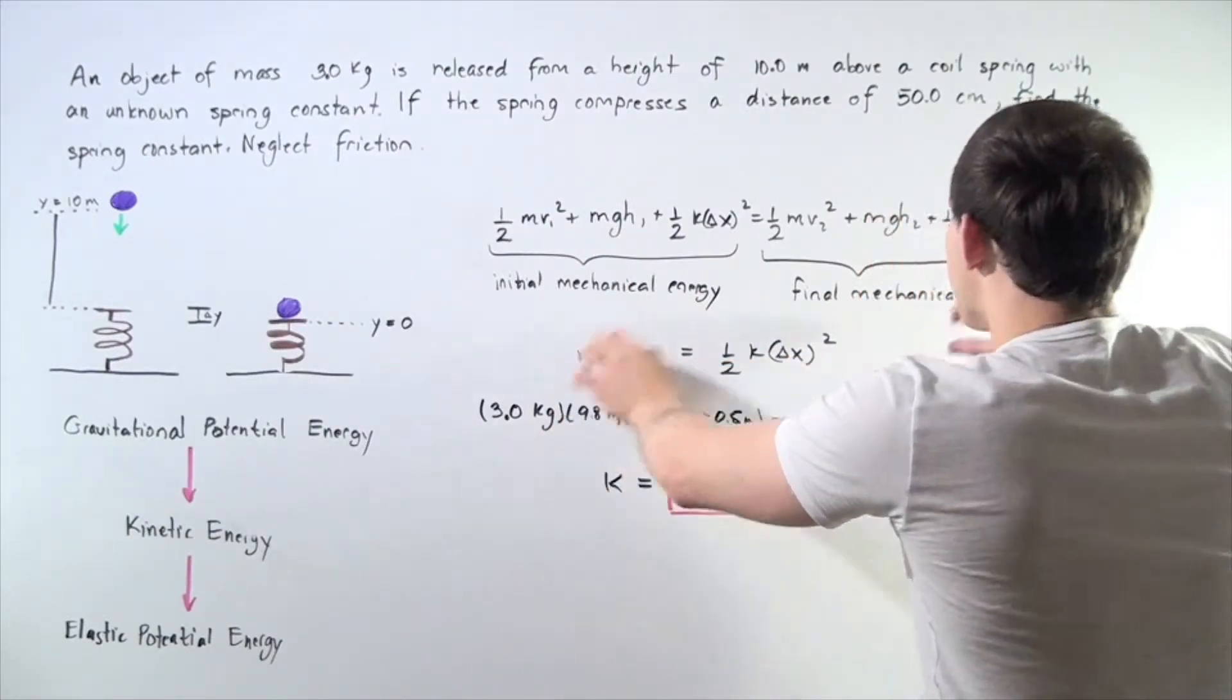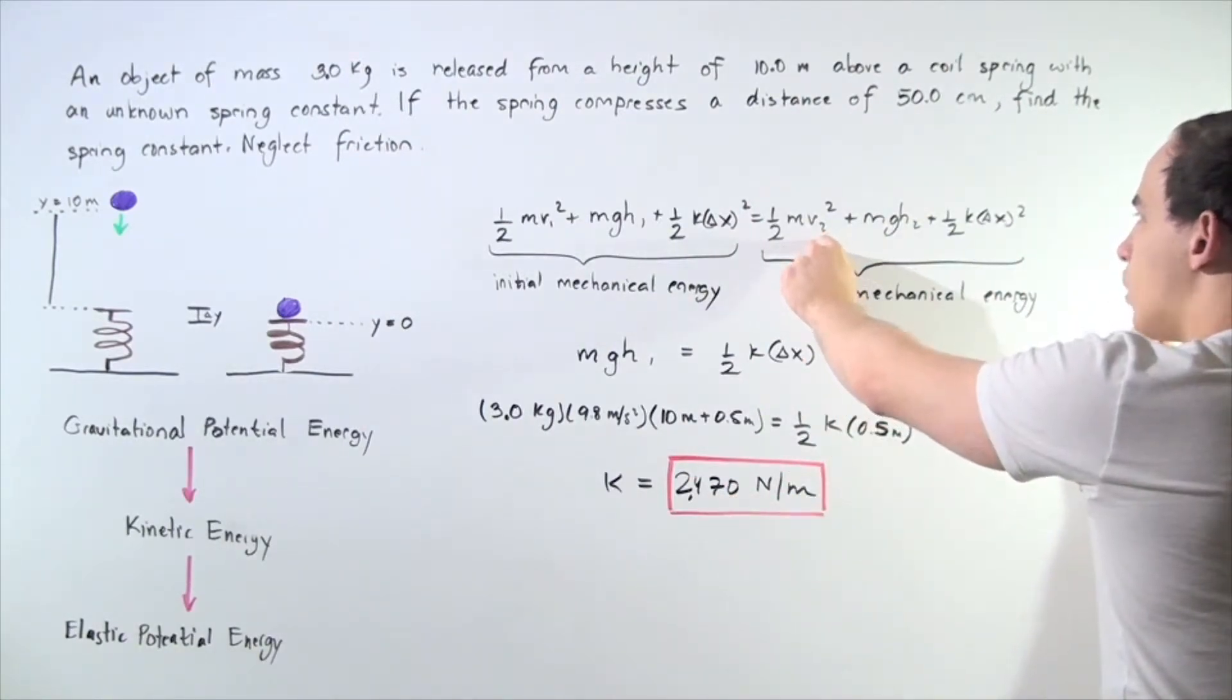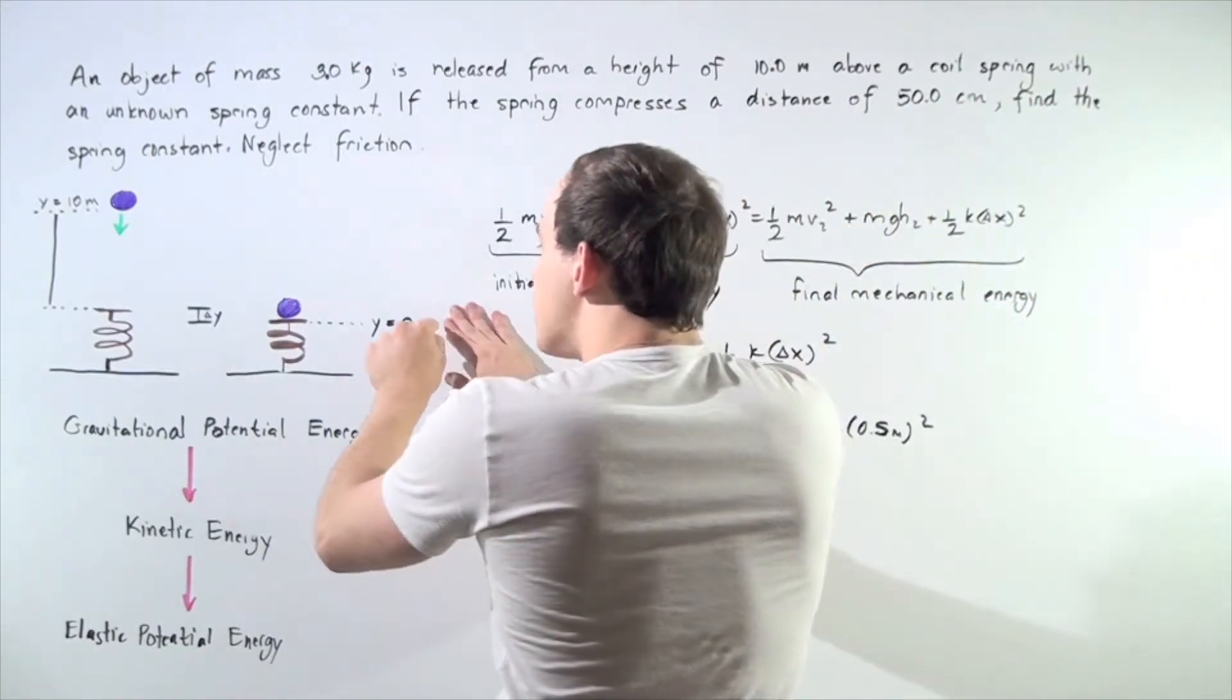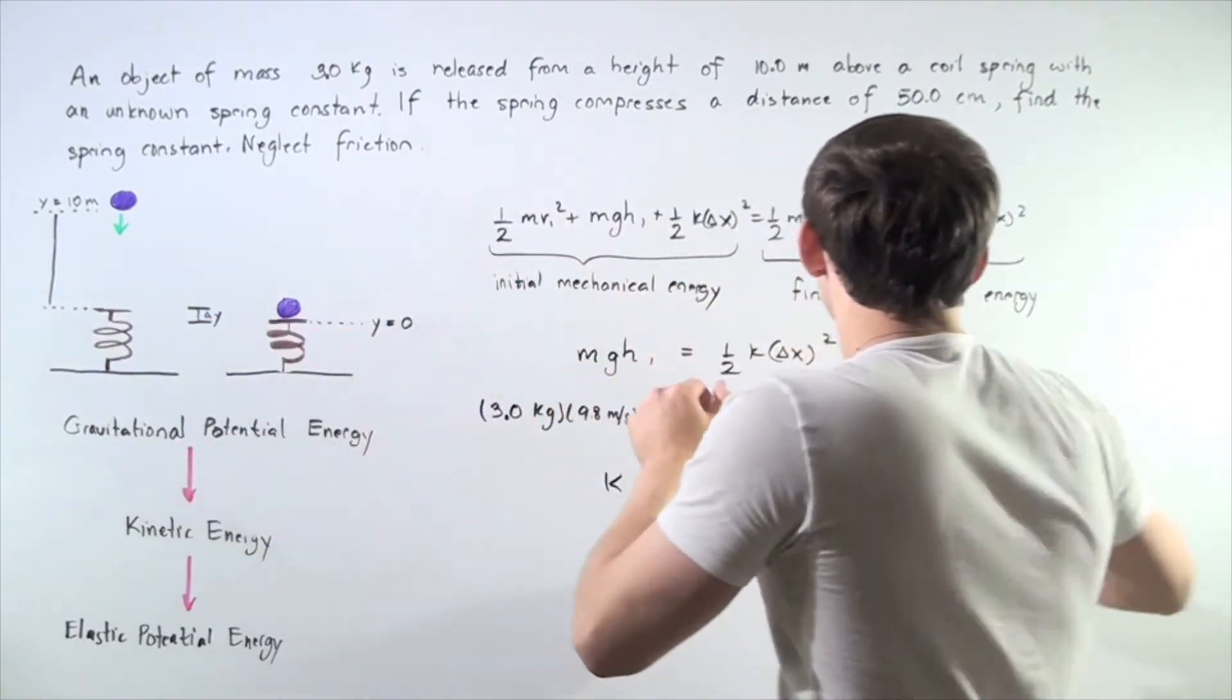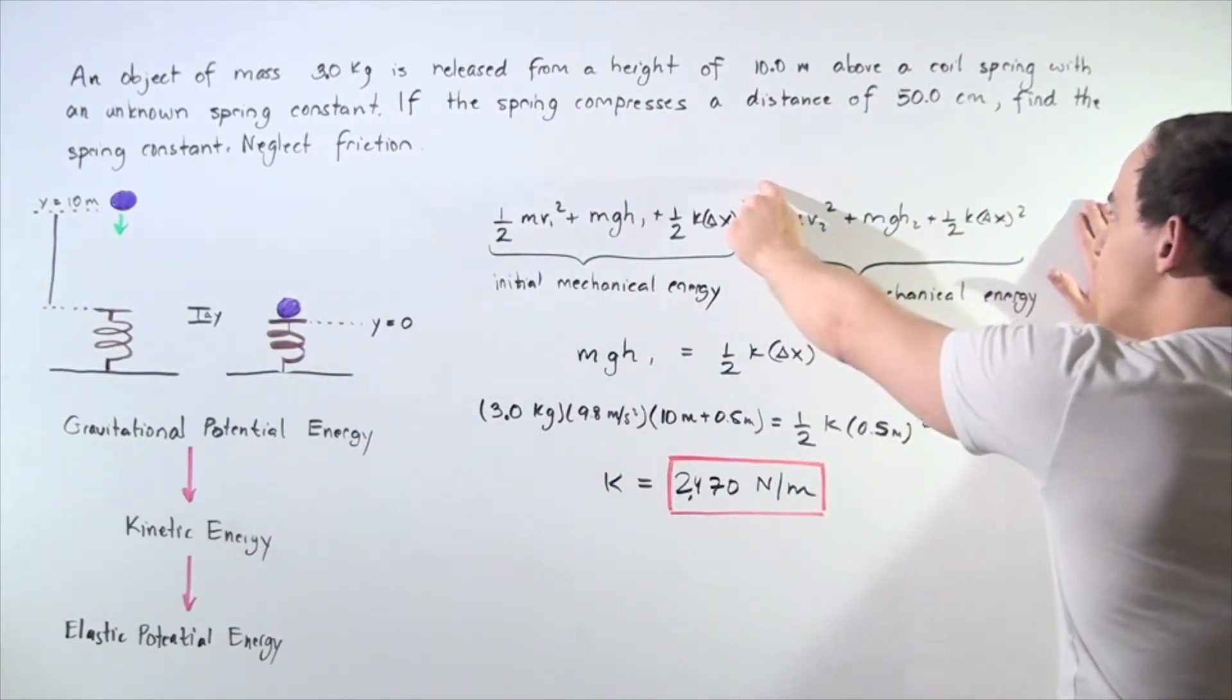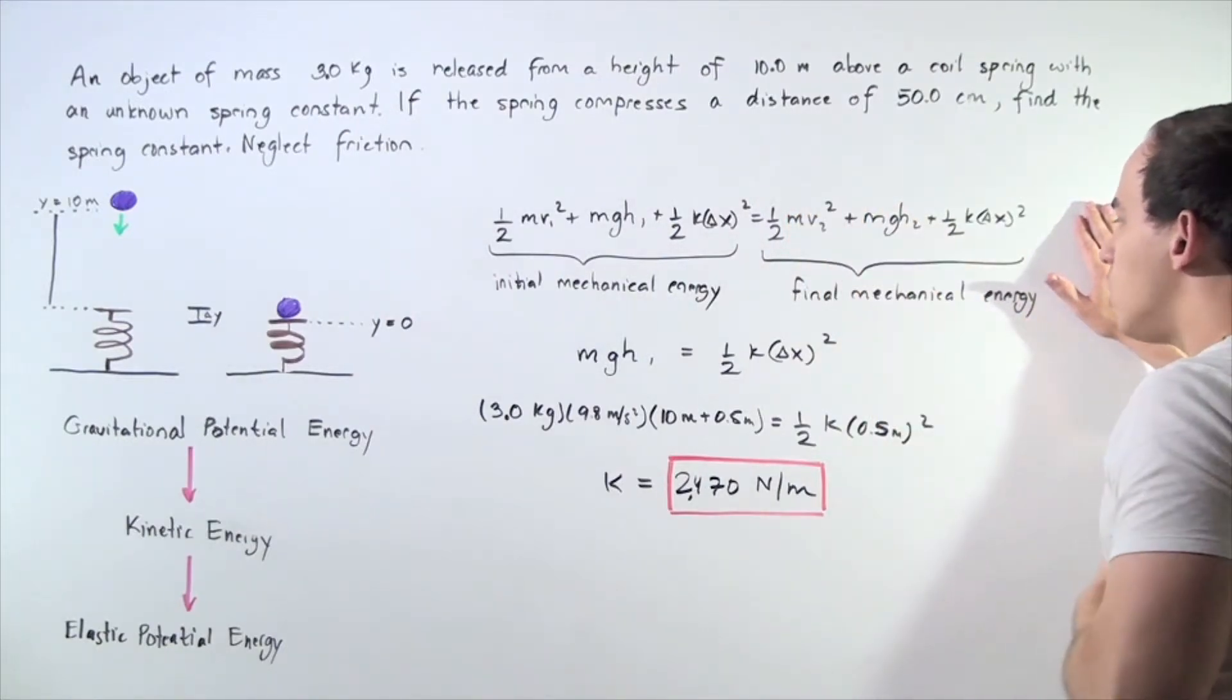In the final case, our velocity is zero, so this cancels out. And because we choose this position to be y equals zero, our height h2 is also zero, so not only will this term cancel, but the gravitational potential energy will also cancel.